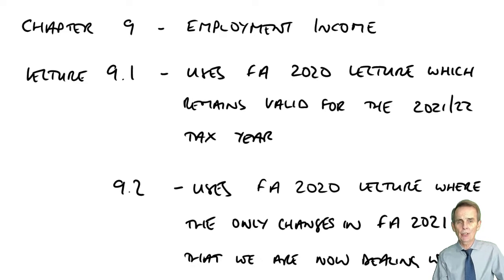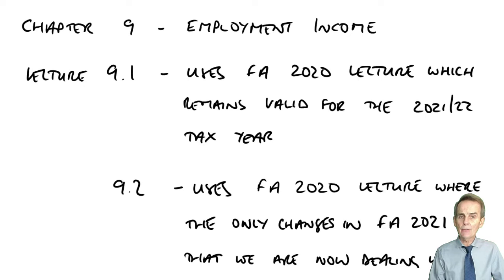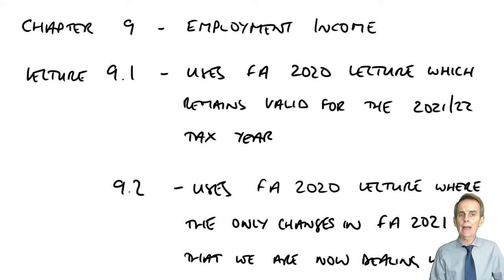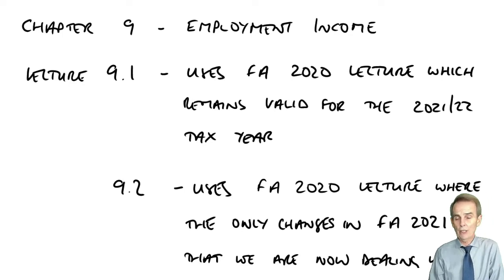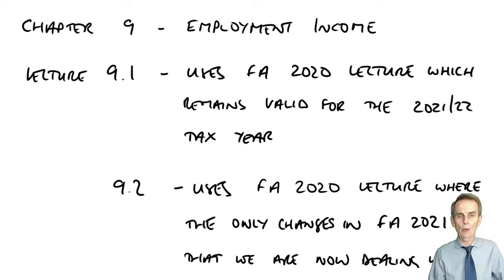We've seen the exercises that need to be done: how to compute the tax-adjusted trading profit of either the sole trader or the partnership, and how to divide out that tax-adjusted trading profit between the partners. Then, having got the tax-adjusted trading profit for each sole trader or partner, how do we determine which profit should be assessed in each relevant tax year of assessment — to know what will go to each income tax computation.